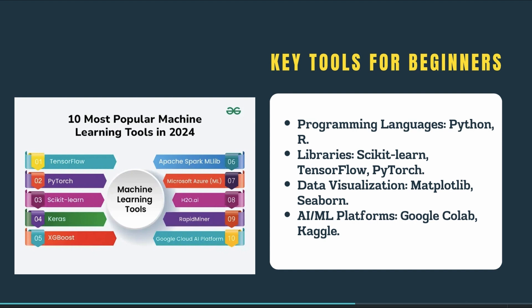Programming languages like Python and R are essential. Python is especially popular due to its rich ecosystem of libraries for AI and ML, such as TensorFlow, PyTorch, and scikit-learn. R is also a great tool — we had a session with Krisha on R for gene expression analysis, and R is really great for applications in biology and genetics. Go check out our video on gene expression analysis using R if you haven't already. These languages allow you to visualize your data and model results.